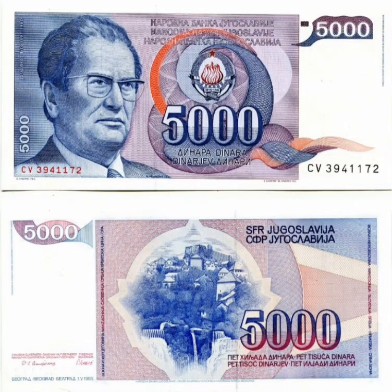The Yugoslav Dinar was a currency that began to be used in the Kingdom of Serbs, Croats, and Slovenes from 1920, and then it was used in the Kingdom of Yugoslavia, Socialist Yugoslavia, and the Federal Republic of Yugoslavia. The names of the countries changed, but not the Dinar, which acquired cult status and ceased to be Yugoslav when Serbia replaced it with the Serbian Dinar and Montenegro with the Euro, years after the former Yugoslavia fell apart.